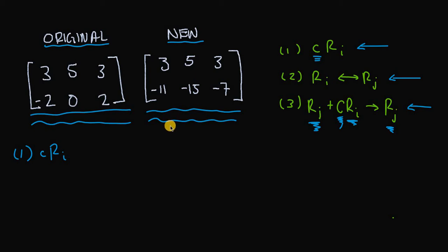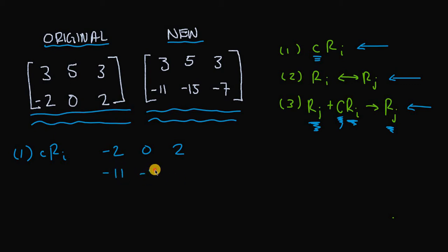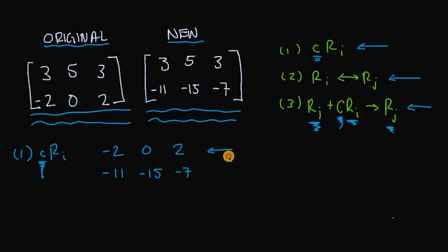More interestingly, let's look at row two. Row two in the original matrix is negative two, zero, and two. Row two in the new matrix is negative 11, negative 15, and negative seven. For rule one to apply, we need to find some nonzero constant c that we can multiply the original row two by to get the new row two.